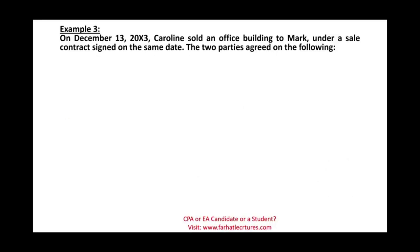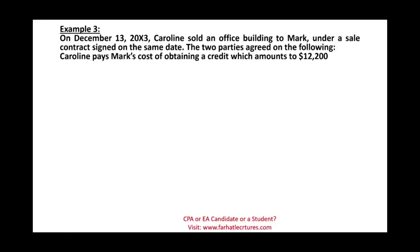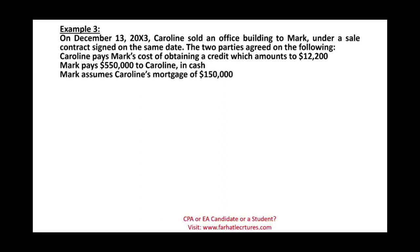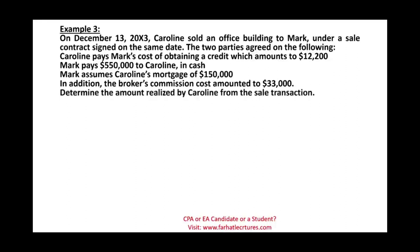On December 13, 20X3, Caroline sold an office building to Mark under a sale contract signed on the same date. The two parties agreed to the following: Caroline pays Mark's cost of obtaining credit of $12,200; Mark pays $5,050 to Caroline in cash; Mark assumes her mortgage for $150,000; and there is a brokerage commission of $33,000. We need to determine the amount realized by Caroline from the sale.